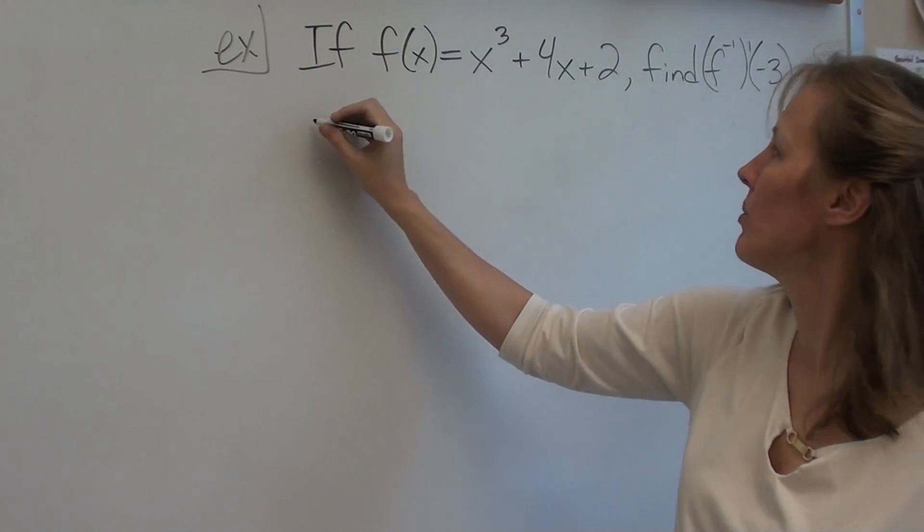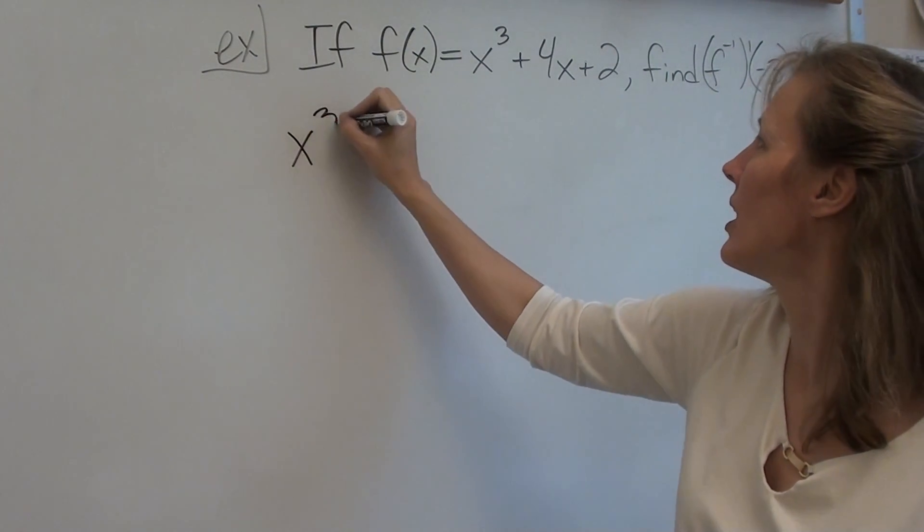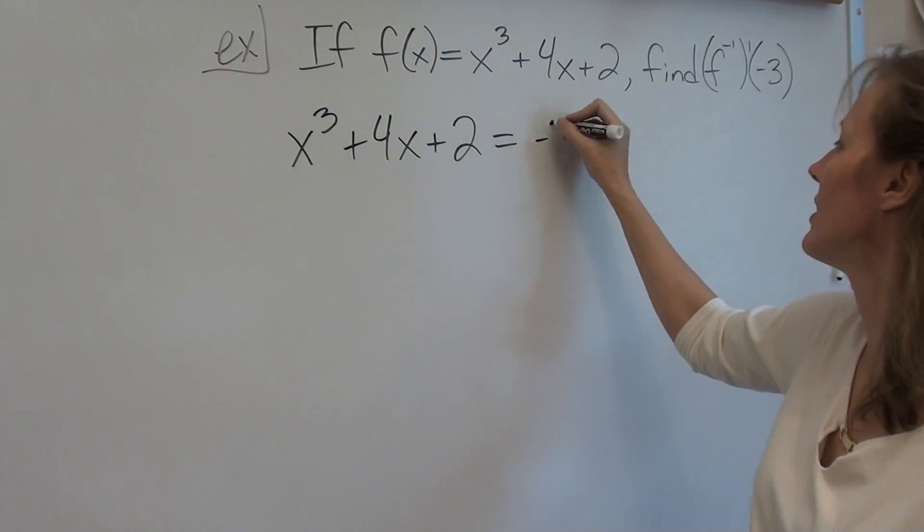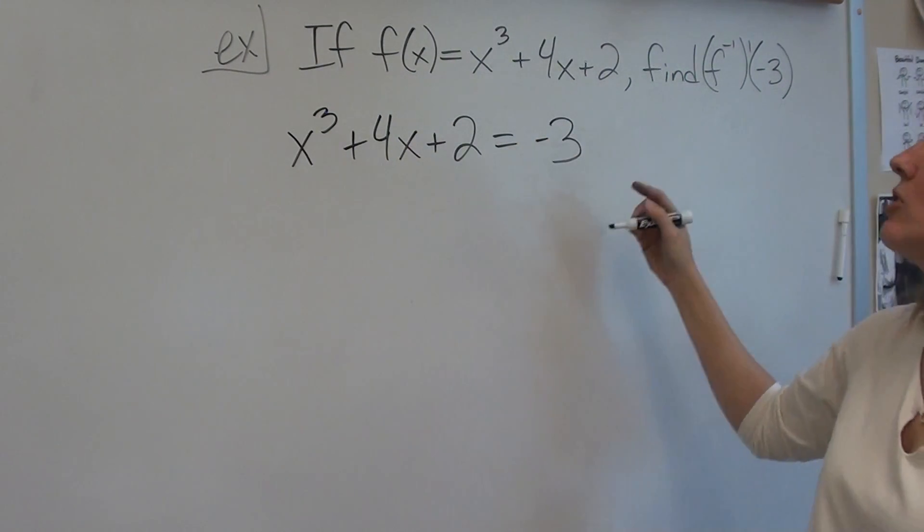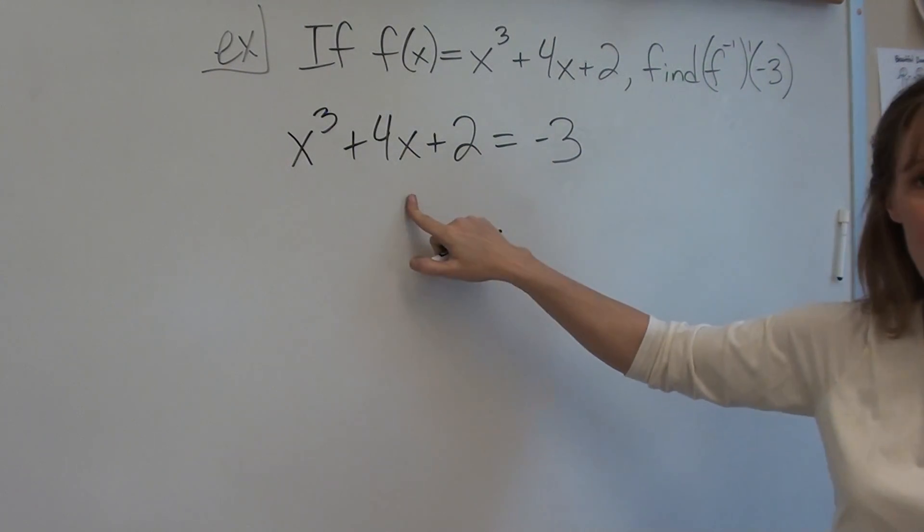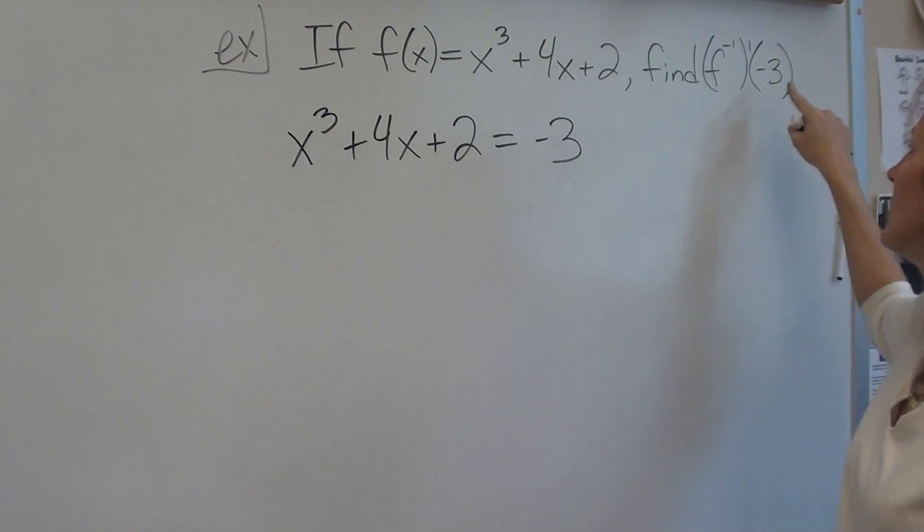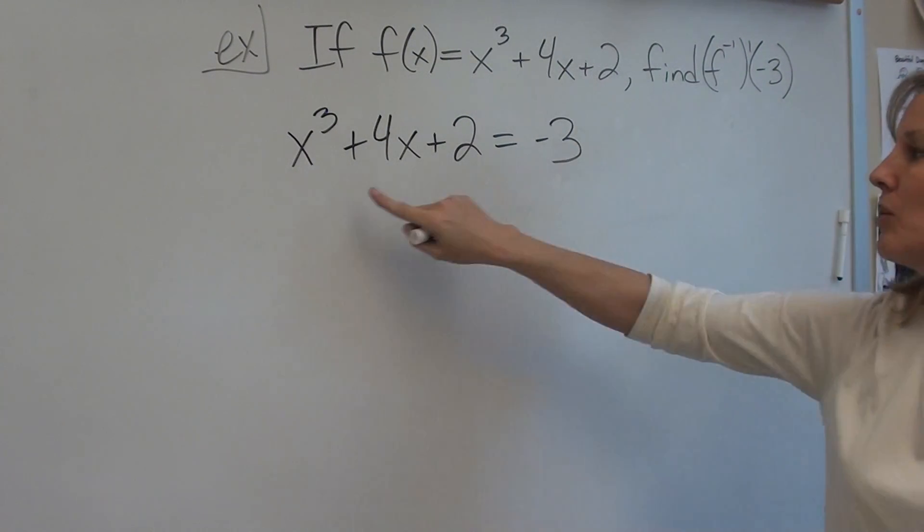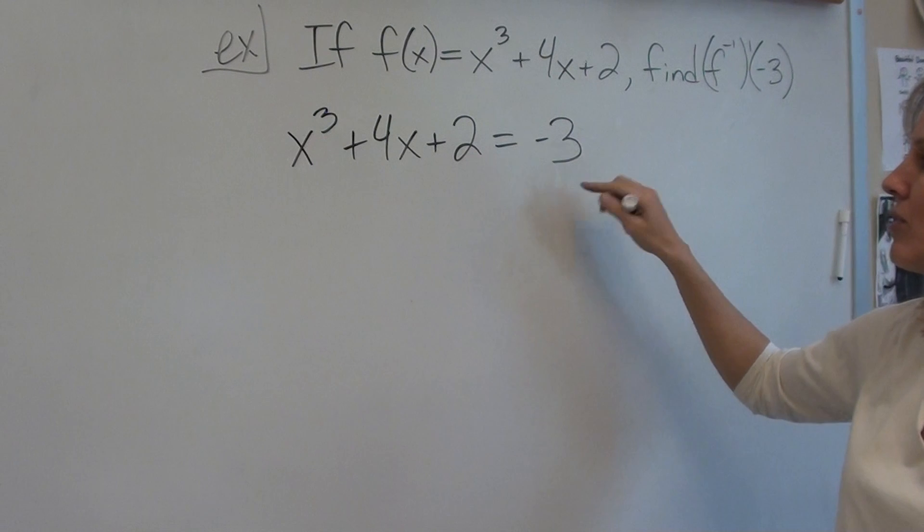So the first thing that we want to do is actually set our f function equal to negative 3. And the reason we want to do that is because negative 3 is an input value for the inverse. It's like an x value for the inverse, which means it's a y value for the original function. Remember, the x values for the inverse are the y values for the original function. So we set our function equal to negative 3.